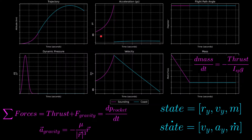On the bottom left, we see the dynamic pressure versus time, and there is a massive spike at the beginning, with the top being called the maximum dynamic pressure, or max Q. We'll be going more into depth on that in the next video. On the top right, we see that the flight path angle is at a constant 90 degrees, since the rocket's velocity is always vertical.